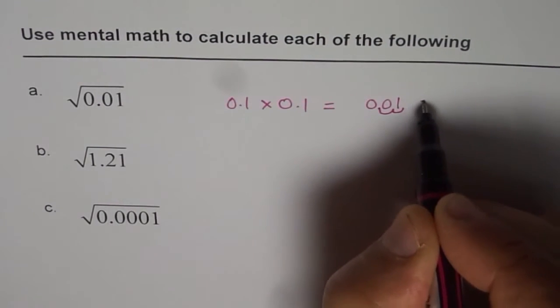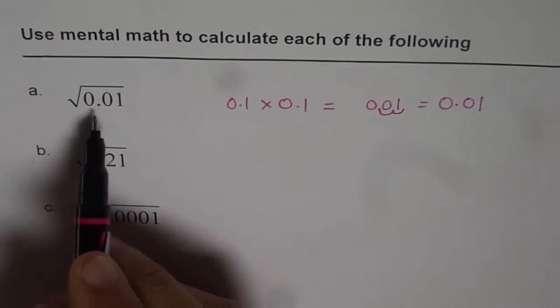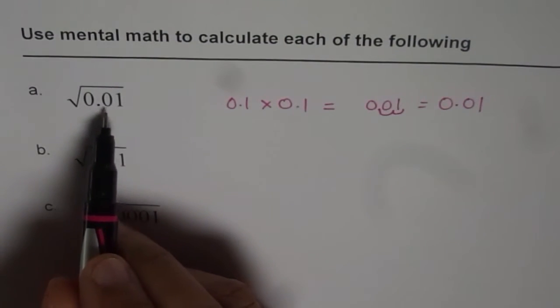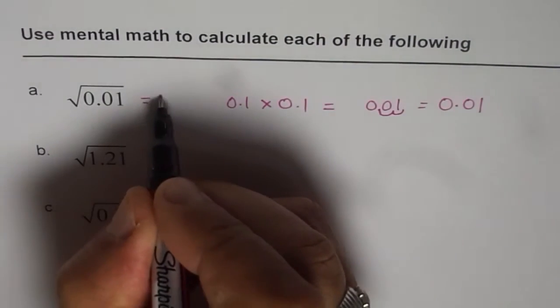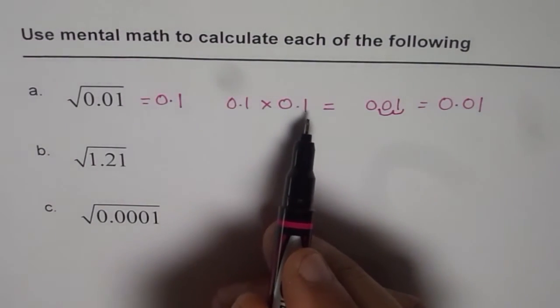I get 0.01, which is what we have here. So the square root of 0.01 should be equal to 0.1. This is 0.1 squared.